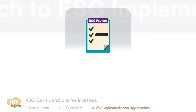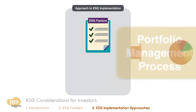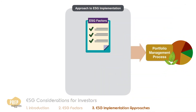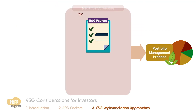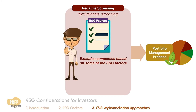Now that we've learned some of the factors of interest for ESG, let's learn some of the approaches to integrate these factors into the portfolio management process. One approach is through negative screening, also called exclusionary screening, where the portfolio manager excludes companies based on certain ESG factors.